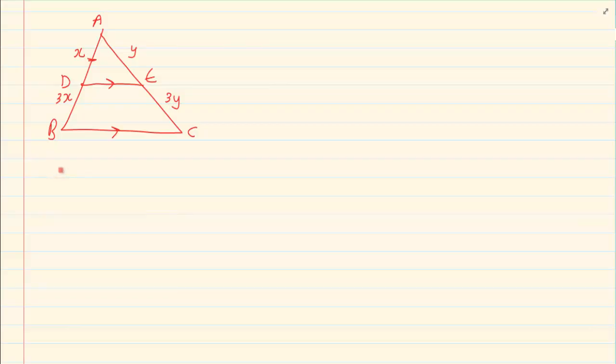It basically said that if I had parallel lines then I had a proportion. So if I had a parallel line then the sides on the triangle would be in proportion. Now what is the difference between this theorem?